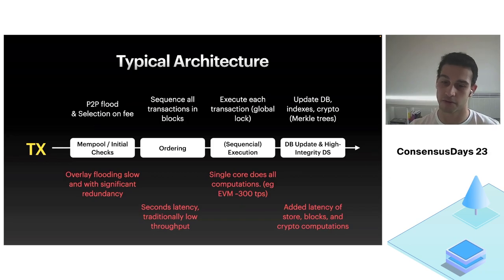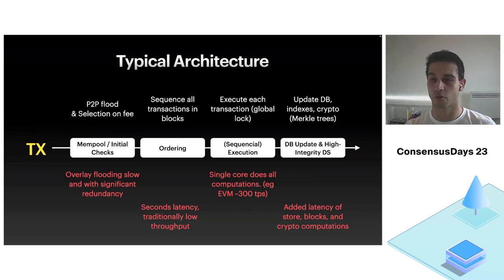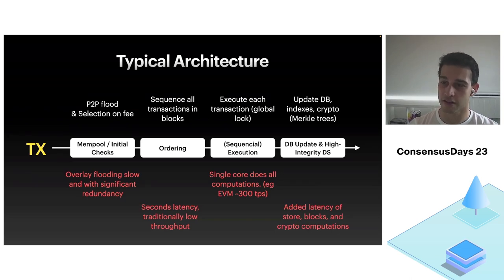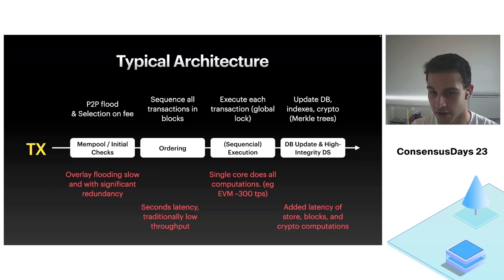Then it goes through execution. Execution is often sequential as well — for instance, if you try to run an EVM on a single-core machine, you will get a couple hundred transactions per second. Finally, you need to persist all your data structures to make sure that consumers of the blockchain can actually make sense of it.